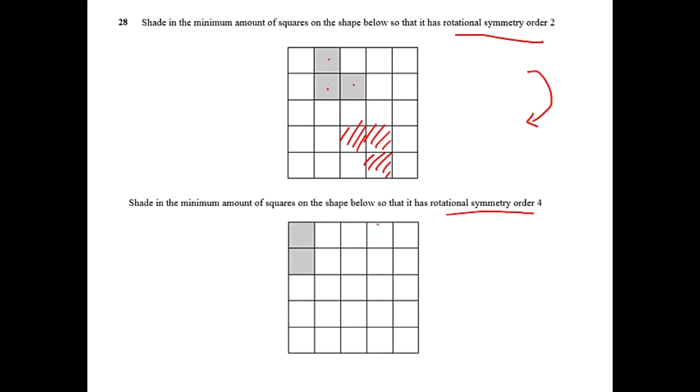So if you turn this round 90 degrees you would get this one. If you go another quarter turn you get this one, and another quarter turn you get this one. And then the last one would take you back to the start. So that's rotational symmetry order 4.